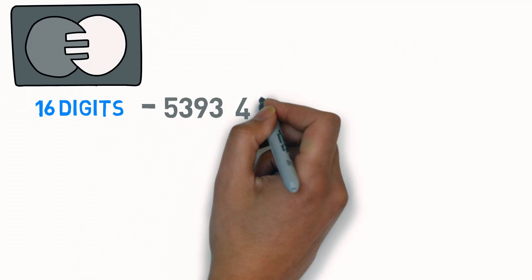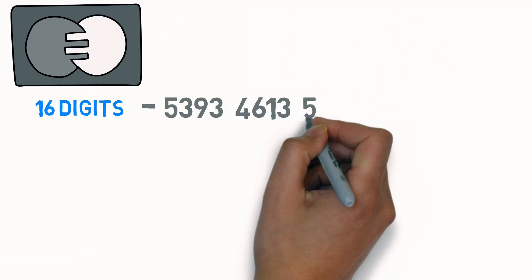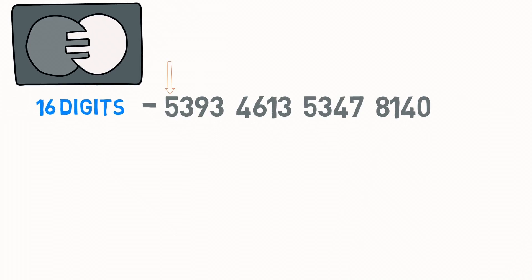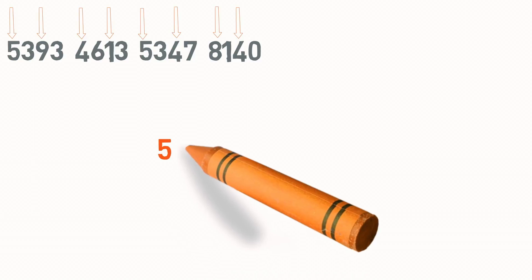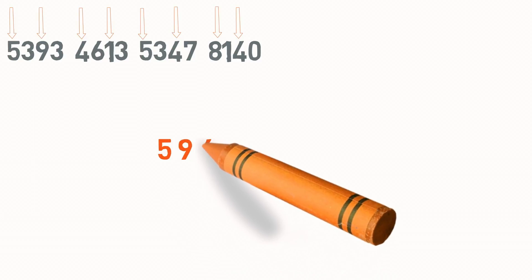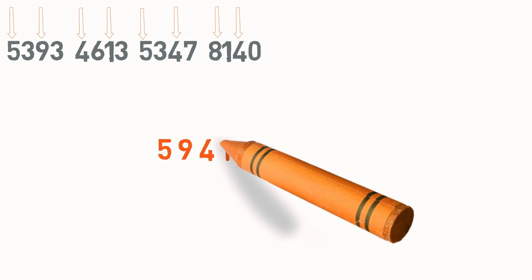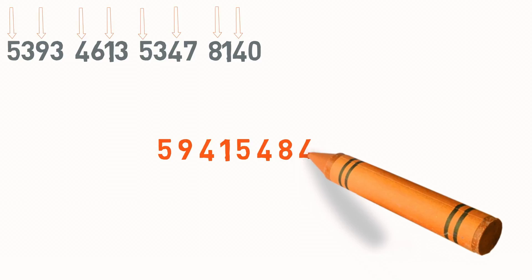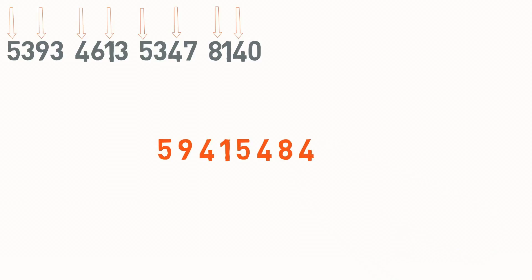We will use a sample credit card number for this video. I will first select the odd-positioned digits of my card and write them down. So we have 5, 9, 4, 1, 5, 4, 8, and 4.